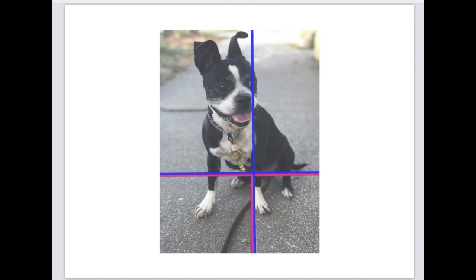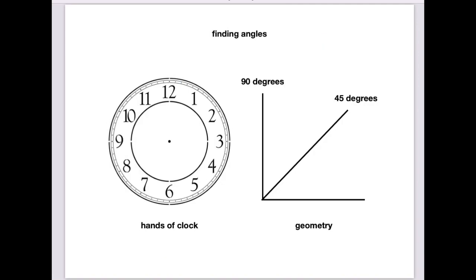Yeah, so either way, whatever is more helpful for you - 45 degrees, 90 degrees, or hands of a clock if that's a better visual for you.